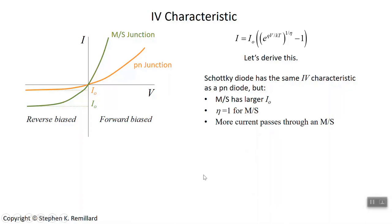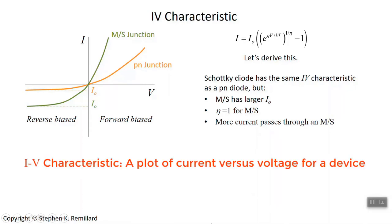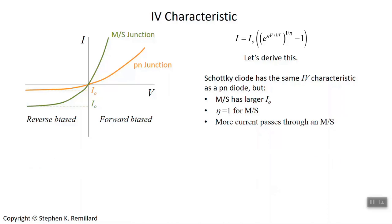Other distinctions can be seen from the typical I-V characteristics. The metal-semiconductor junction has a much larger reverse bias current, but on the flip side it passes much more current for a given voltage than a p-n junction. This makes a Schottky diode useful for high-speed circuits, allowing fast current delivery to charge capacitances in CMOS, and its low forward voltage drop makes it a better rectifying element for low-voltage circuits.